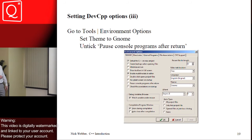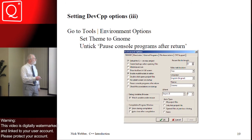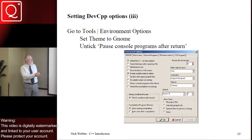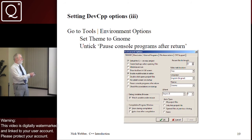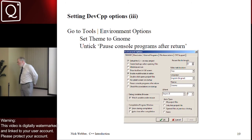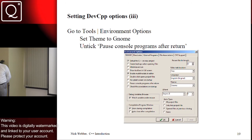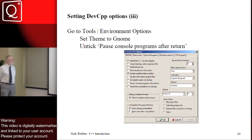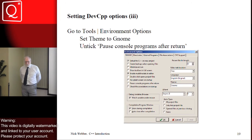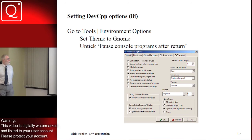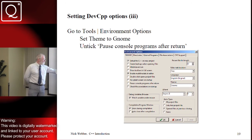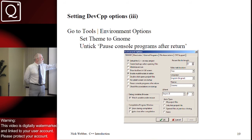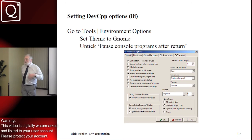In Tools Environment Options you can set the theme to GNOME if you haven't already done so. There's another option, Pause Console Programs After Return. This stops the console window from flashing out of existence when the program finishes. I keep that unticked, but you may wish to tick that. I have a little function that keeps the window open at the end, so I don't need that ticked. Other things: I like to show compilation while I'm running, I like to default to C++, and I like to have multi-line tabs in the editor. You can choose the options you prefer.